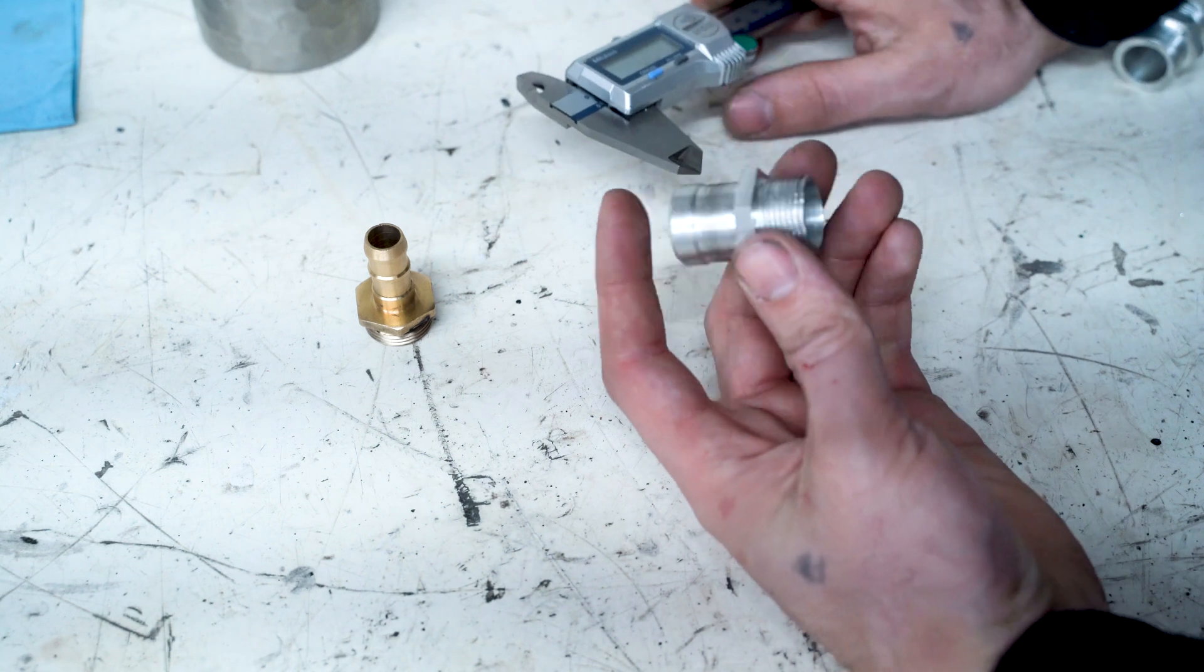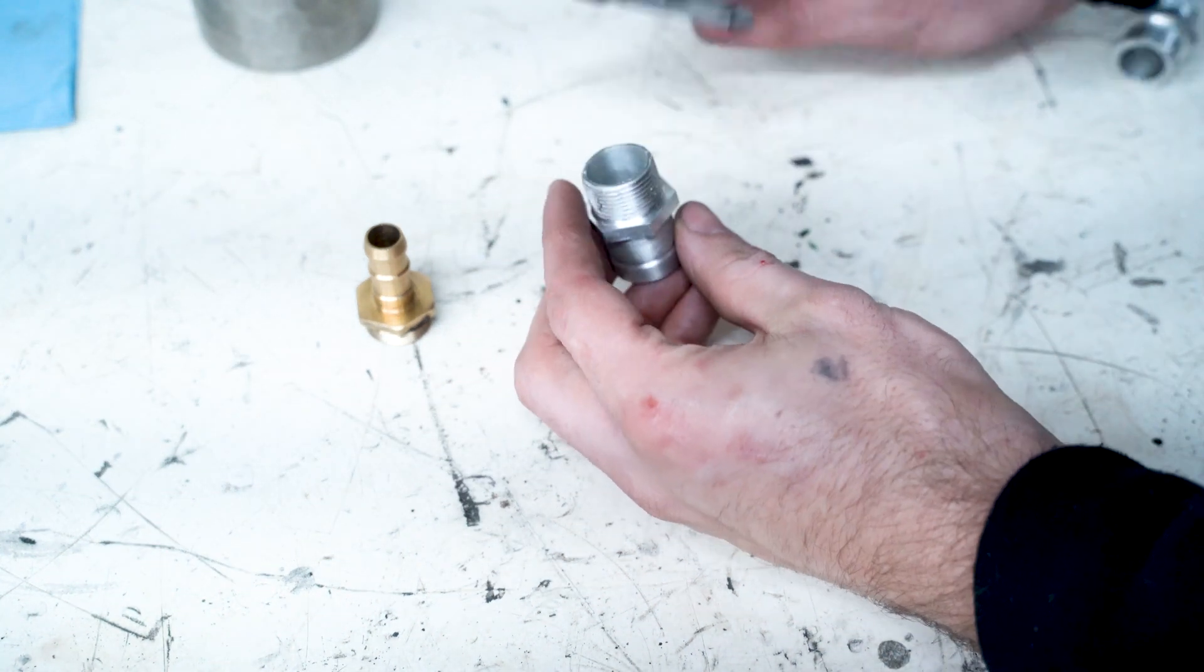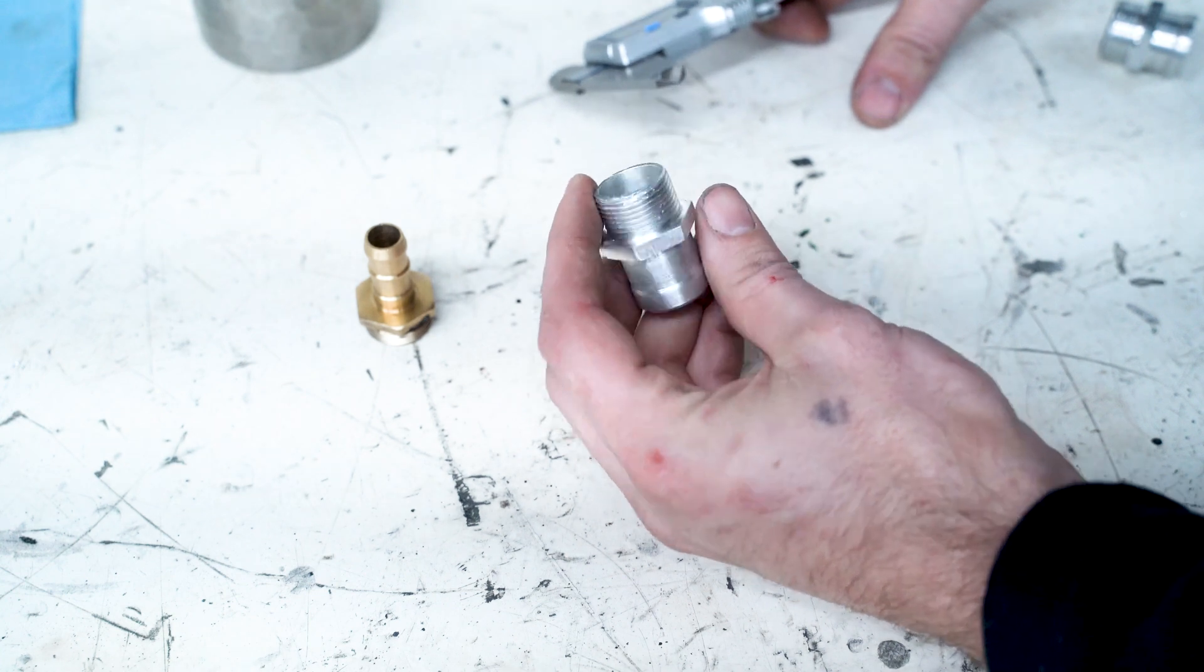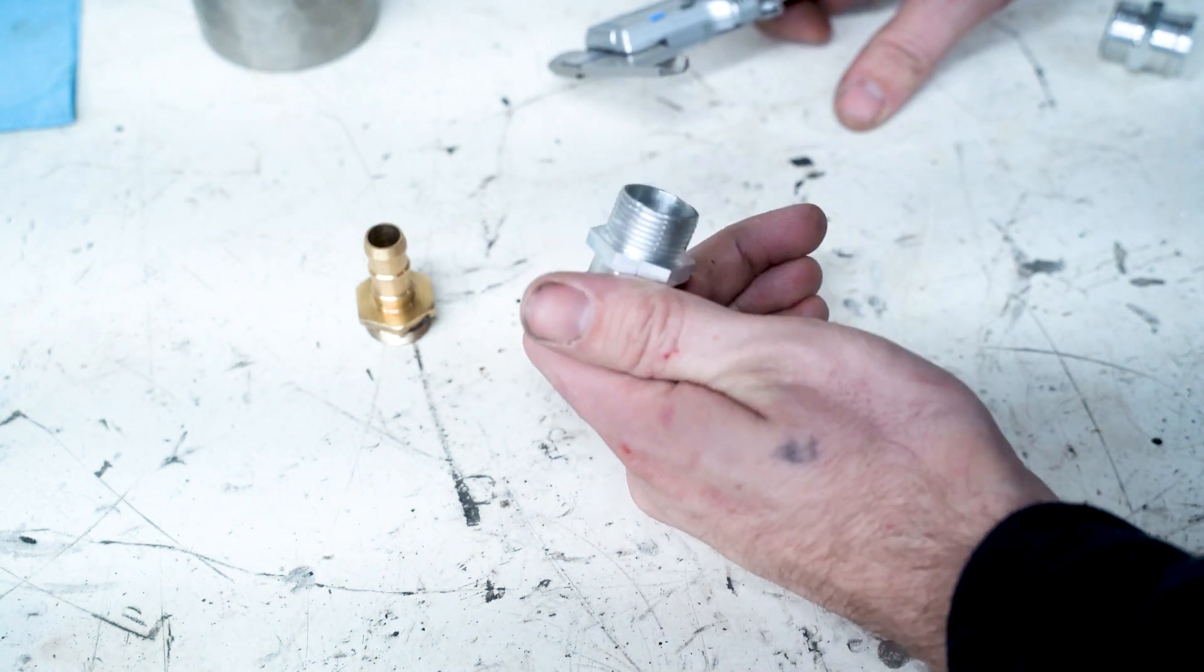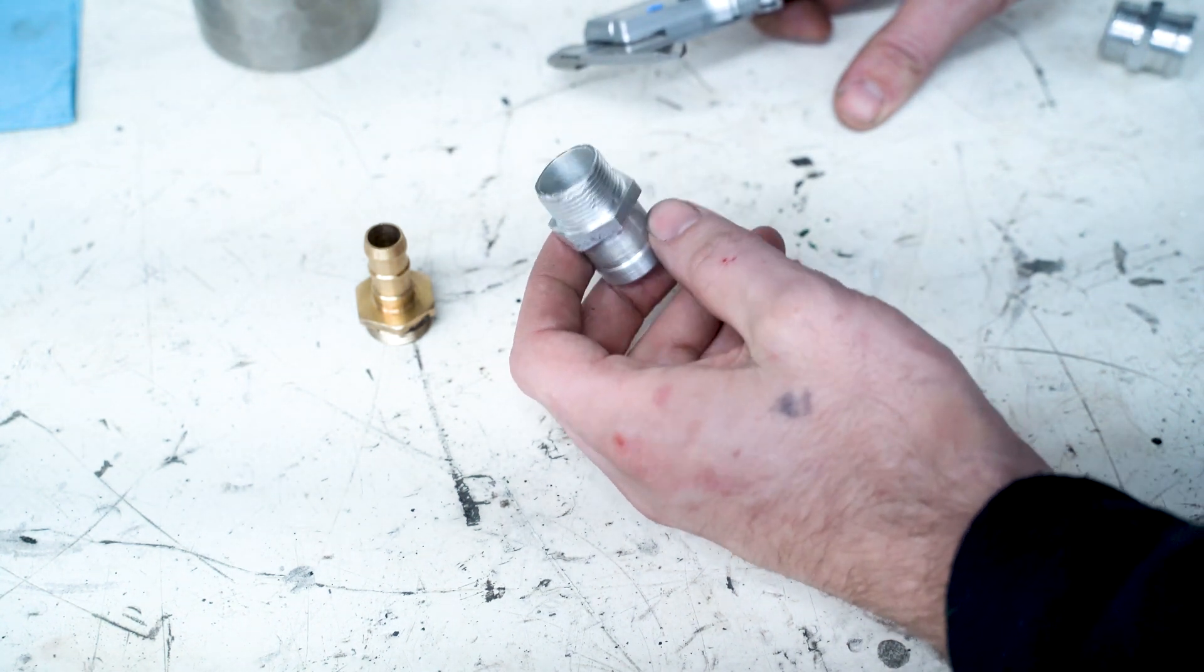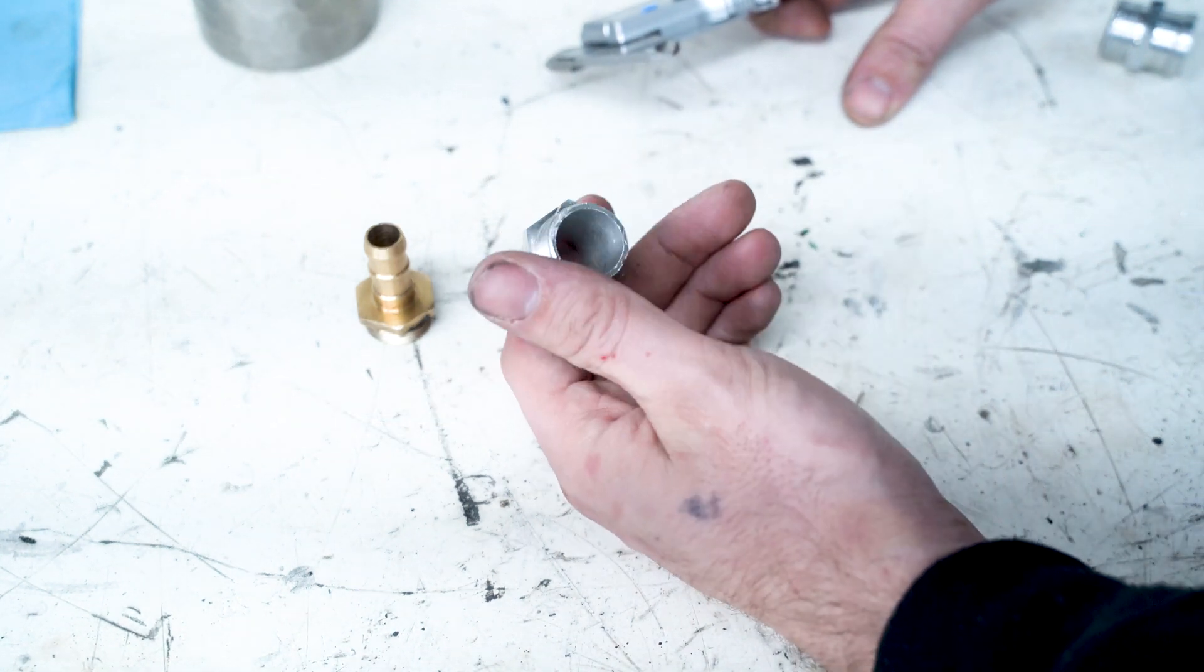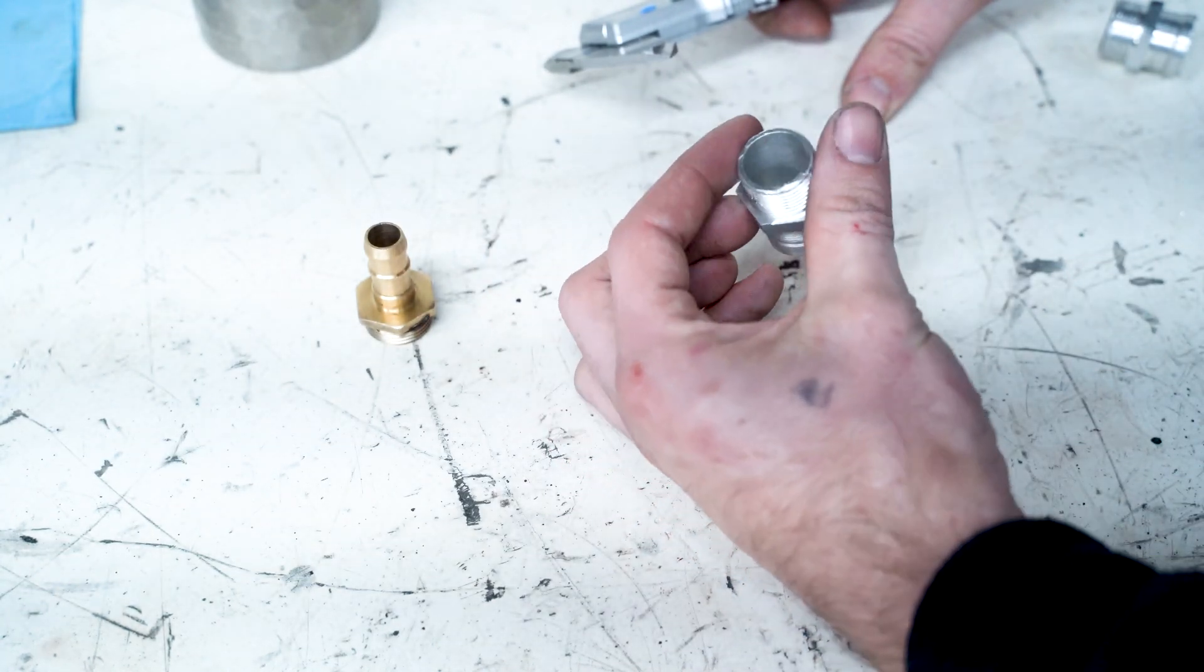So what I did was I machined one from scratch. I machined it out of a solid block and thread milled the M22 x 1.5 thread. The reason I did all this was because the head's already on the block, and if I try to tap or do anything where I have to remove material, I risk chips going into the block and circulating through my cooling system, which would be bad.